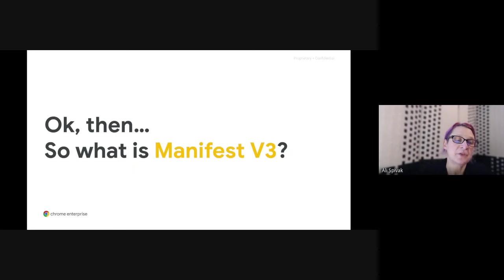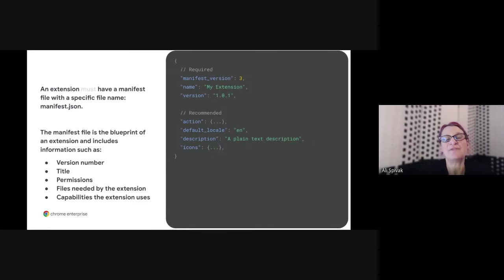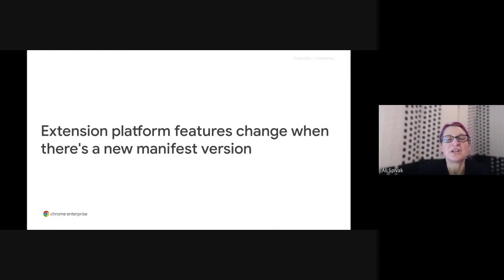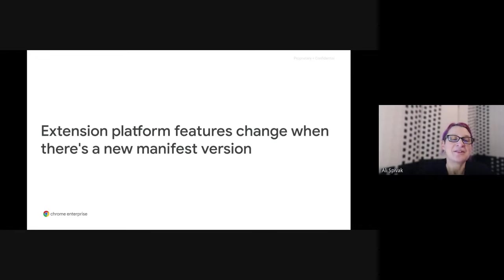A manifest is a JSON file that defines an extension and must be in the extension's root directory. The manifest version being used is called out in this file. The manifest version contains an allowed set of supported web and browser APIs and features that define what the extension platform is. Manifest V3 was launched in Chrome 88, and all new extensions are required to use it. Eventually, we plan to deprecate Manifest V2, at which point V2 extensions will no longer be allowed in the Chrome Web Store.